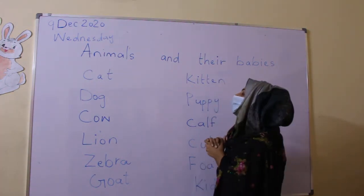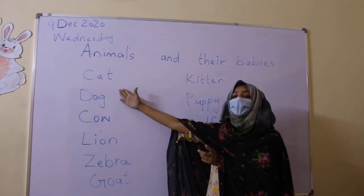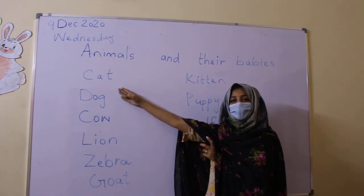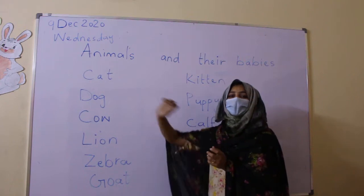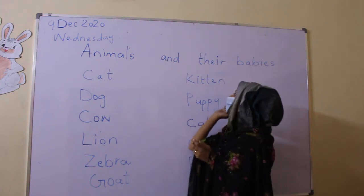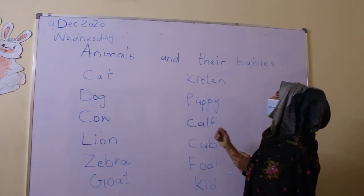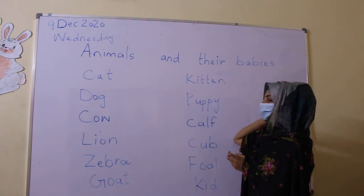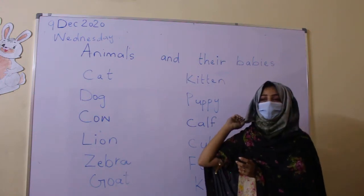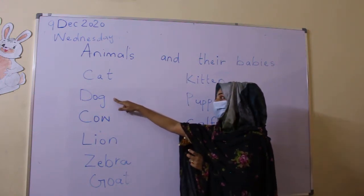The first animal we have is cat. Cat. And the name of her baby is kitten. Kitten.